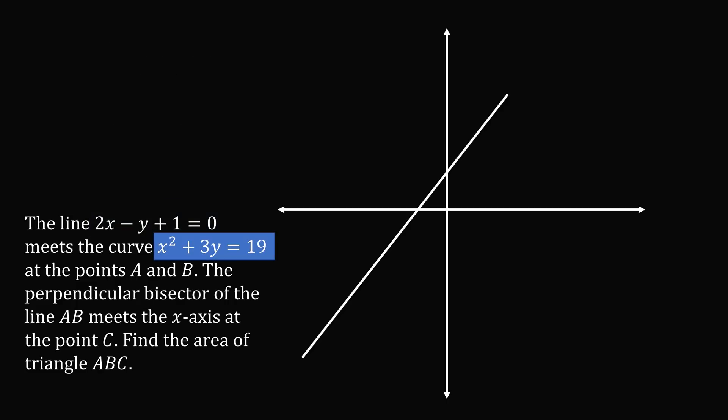Now we have the curve x squared plus 3y equals 19. Subtract x squared from both sides of the equation and then divide by 3. y equals 19 over 3 minus x squared over 3. So this type of equation you should recognize, it's the equation of a parabola.